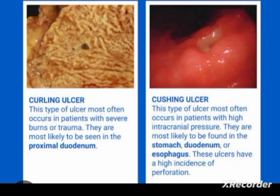Stress ulcers. The two main important stress ulcers are the Cushing ulcer and the Curling ulcer. The Curling ulcer is the most common type of ulcer occurring in severe burns or trauma, and it is most likely seen in the proximal duodenum.